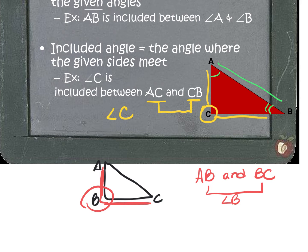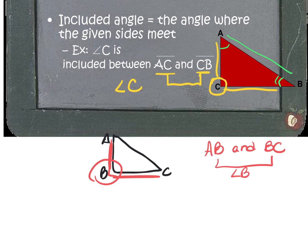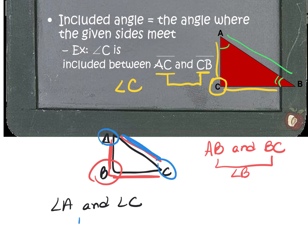The included side between angle A and angle C would be the side in between those two angles, which is AC. A quick hint: just take the two letters and drop the angle sign, and that gives you your side length.